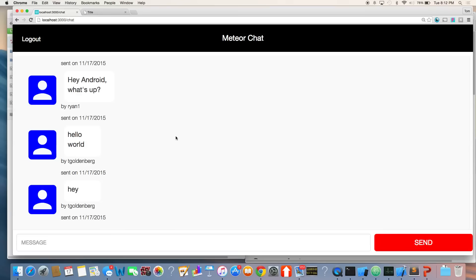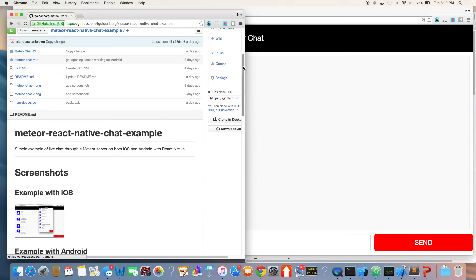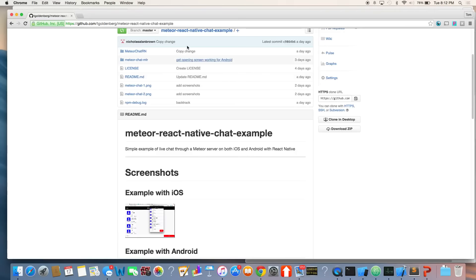And chat, I'll show you in a second, has a couple components to it. One is the form on the bottom, so that's a component called message form. The messages are a thing called message box, a component, and that has individual messages. And then I have a header.